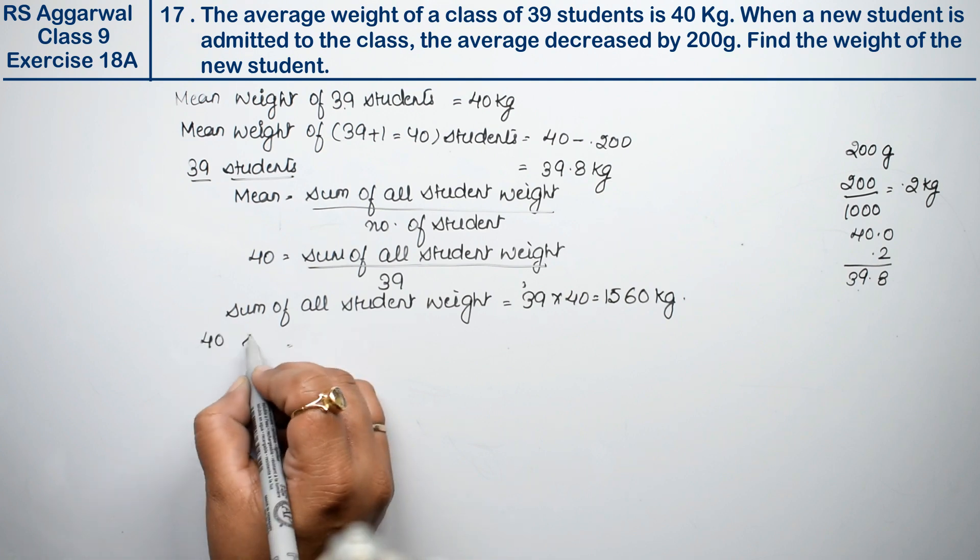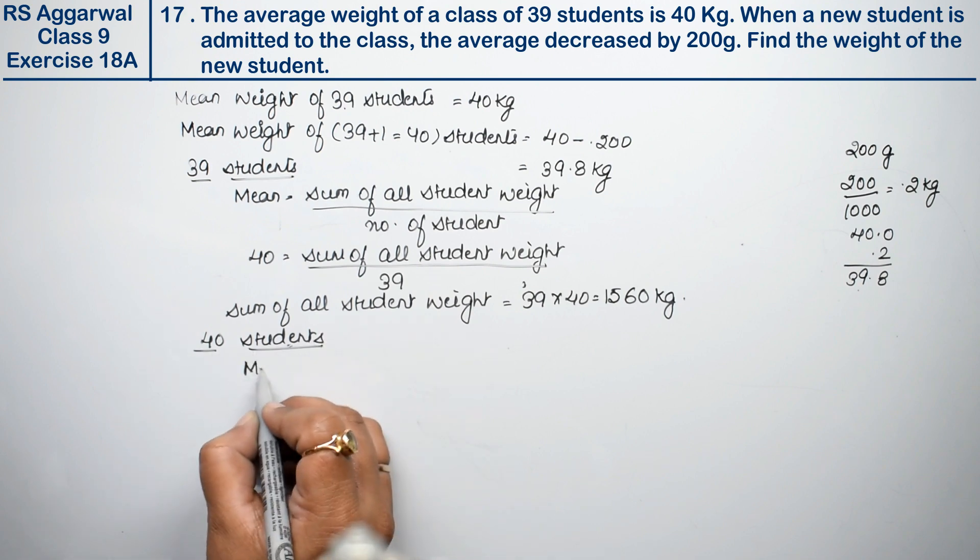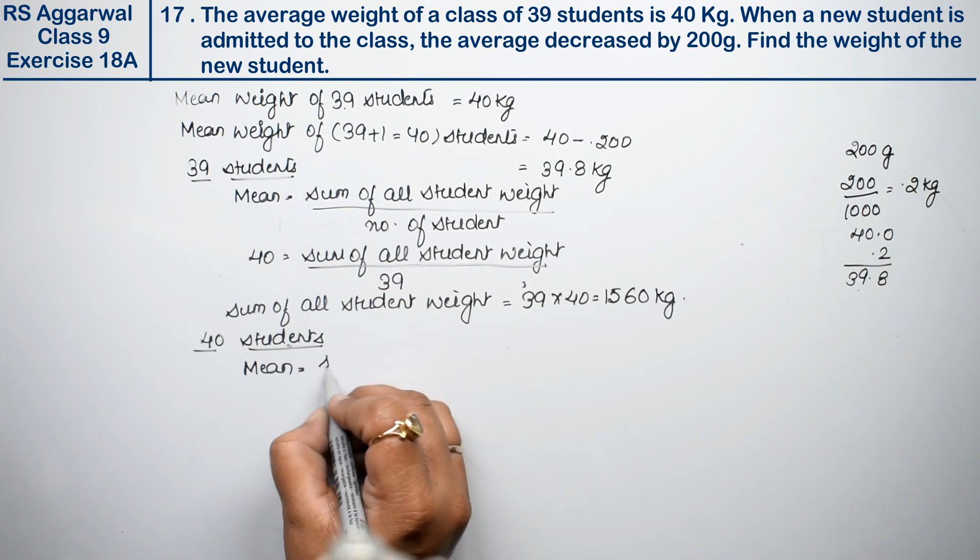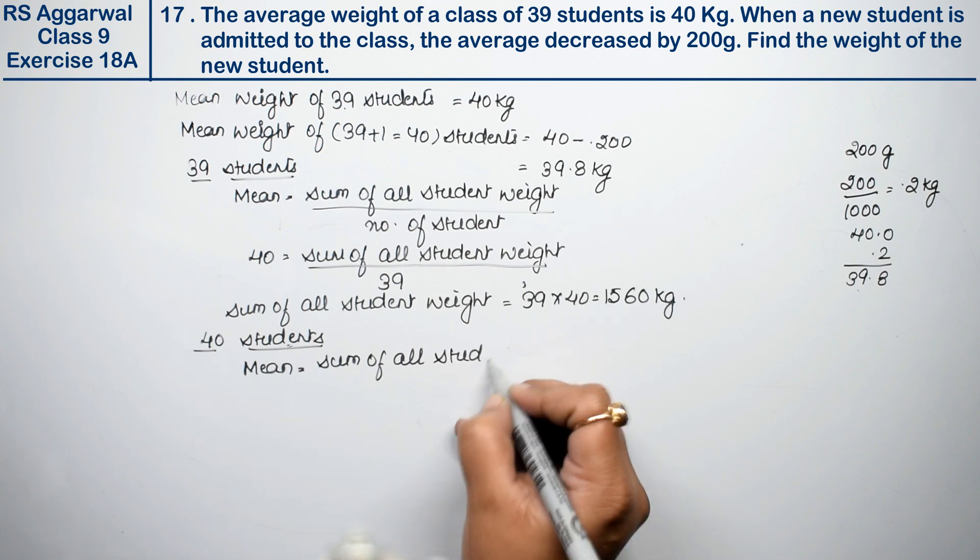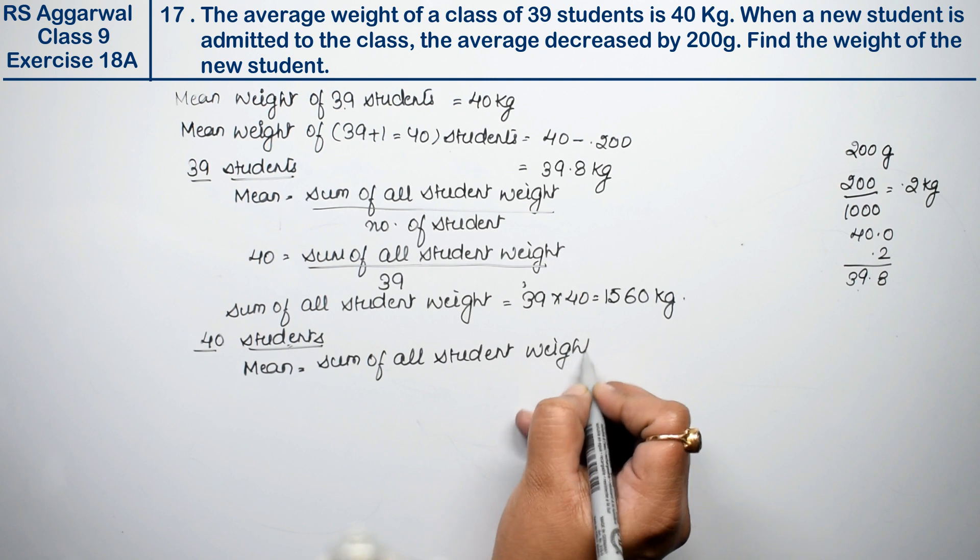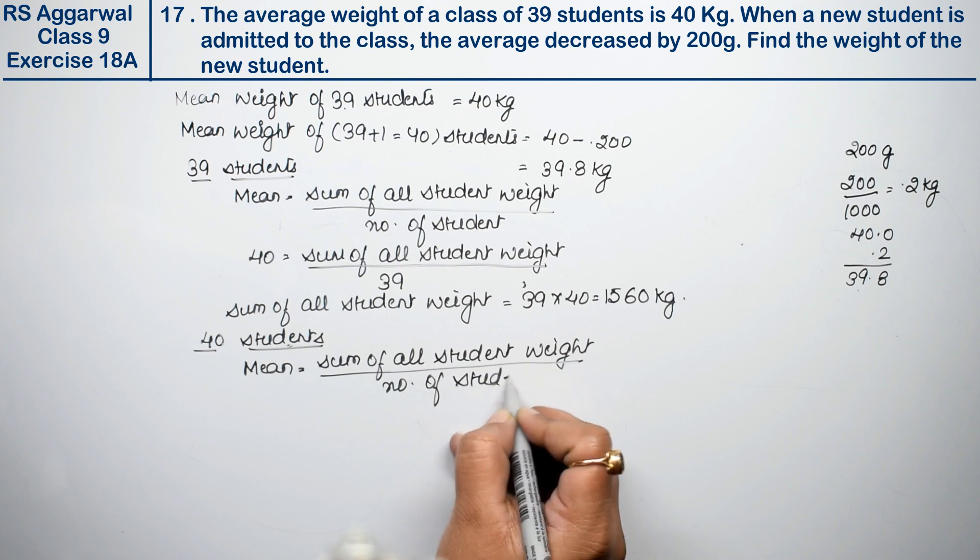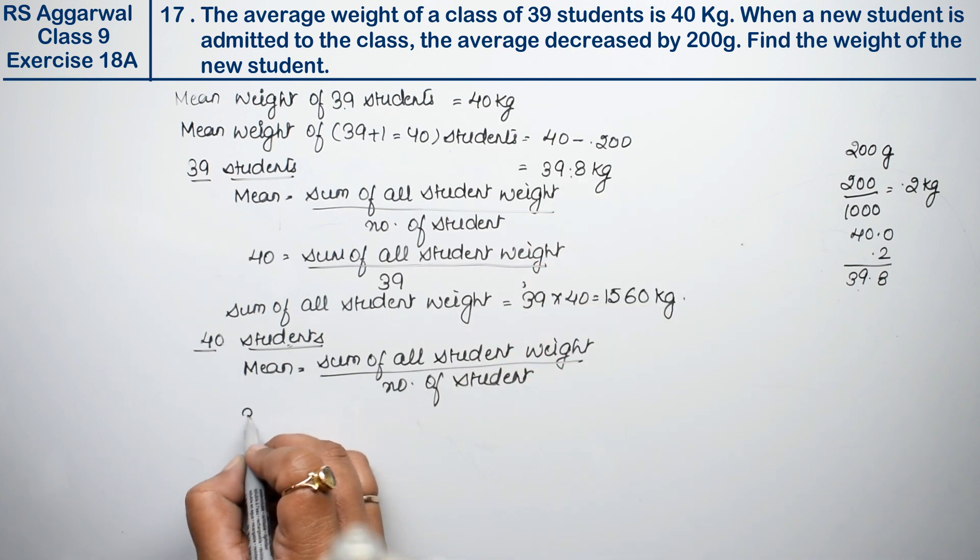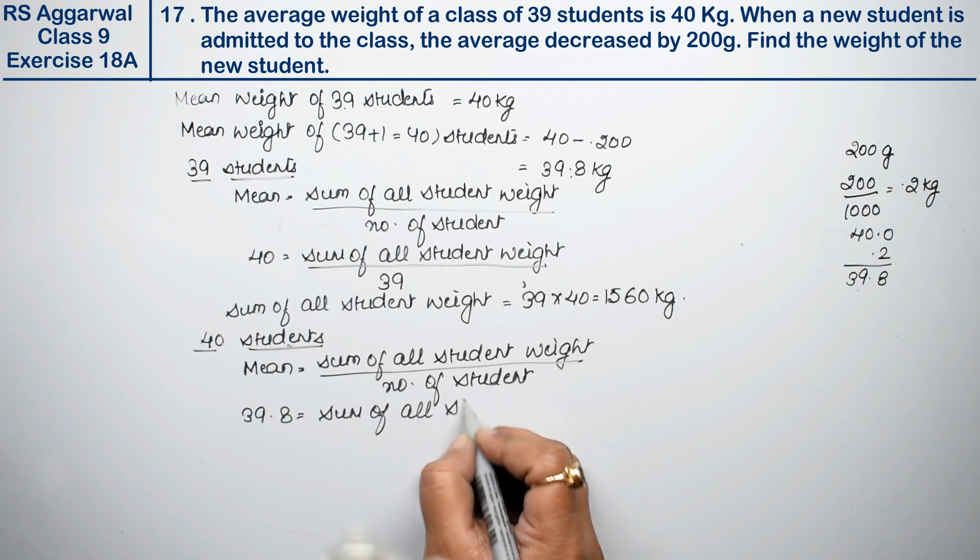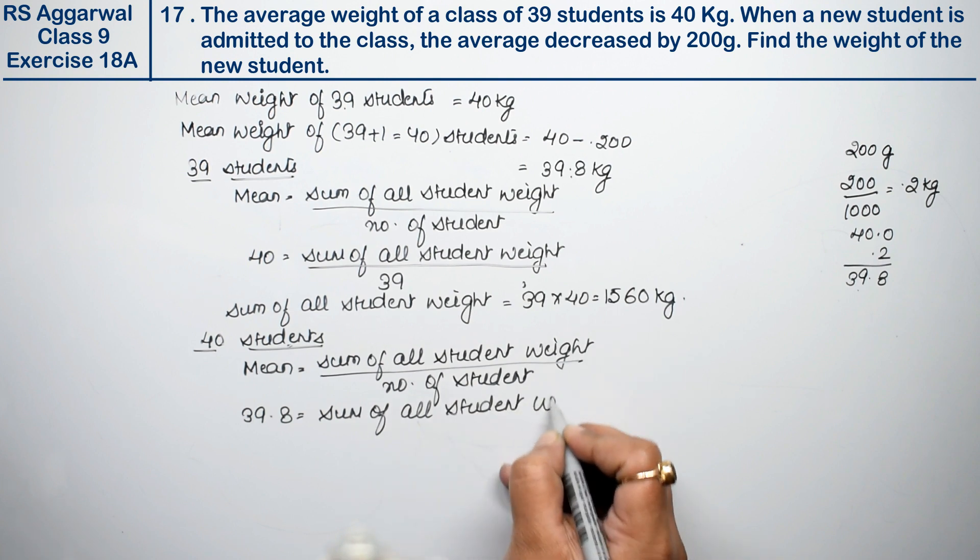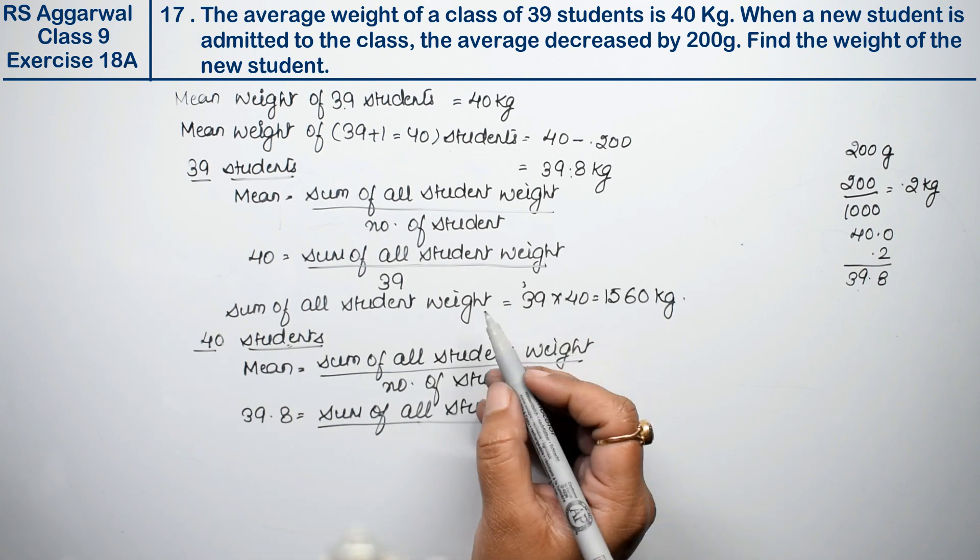Now we have 40 students. So 40 students came. Now what mean will we find? Same formula. If you want, you can write it again. Sum of all student weight upon number of students. The mean weight we calculated is 39.8. Sum of all students' weight divided by how many students? 40.